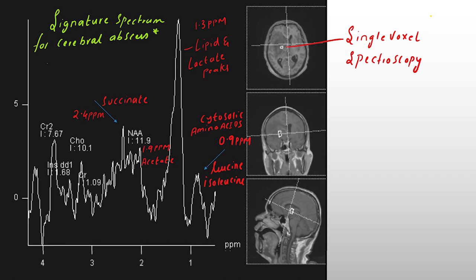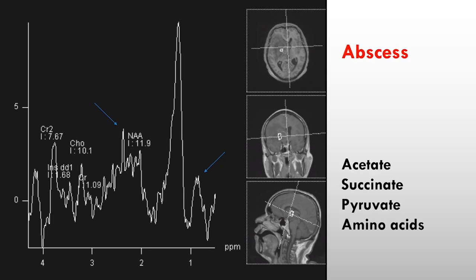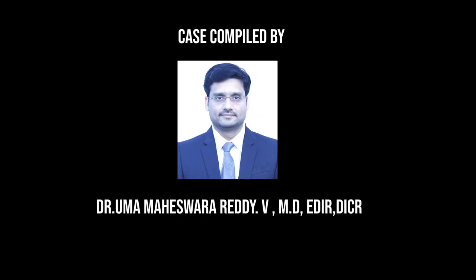The succinate peak, which is relatively specific for abscess, comes around 2.4 ppm. A combination of these amino acids and succinate along with the lipid-lactate peak gives us a virtual diagnosis and signature for MR spectroscopy in combination with conventional and diffusion weighted imaging sequences. One needs to analyze these metabolites meticulously to diagnose abscess — that is, acetate, succinate, pyruvate, and amino acids. Thank you very much for your attention.